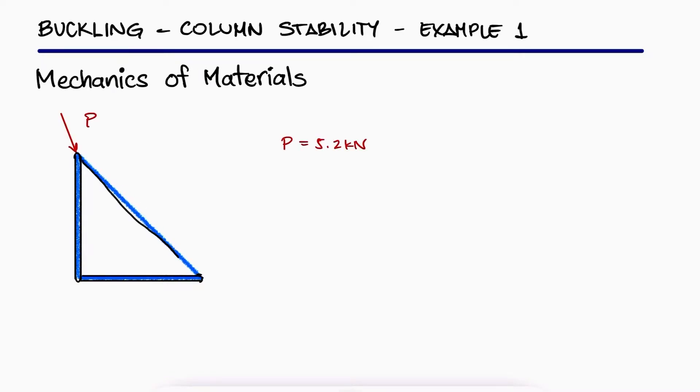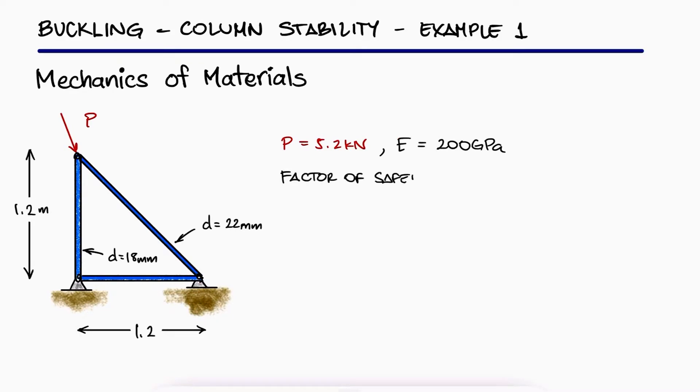Knowing that load P is 5.2 kN and that the elastic modulus is 200 GPa, what is the factor of safety against buckling for the structure shown? This is the first example for the column buckling main video. The link to that main video and the other examples are linked in the description below.